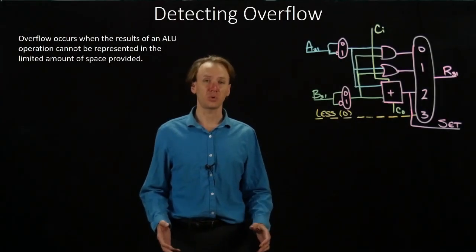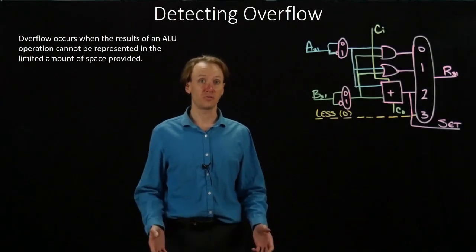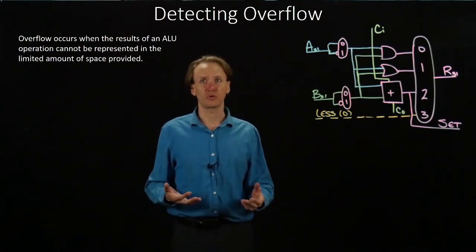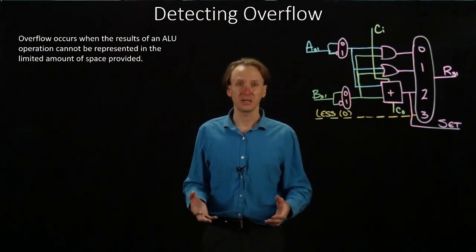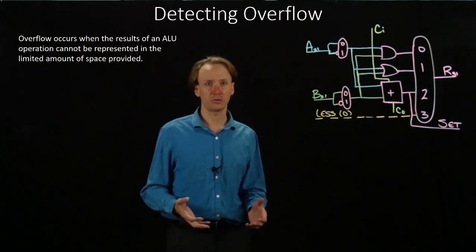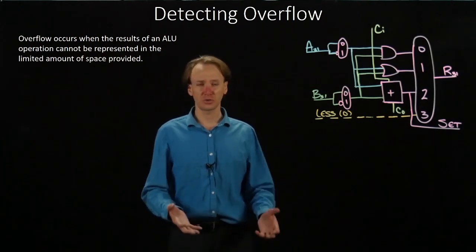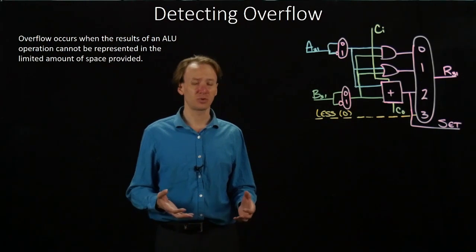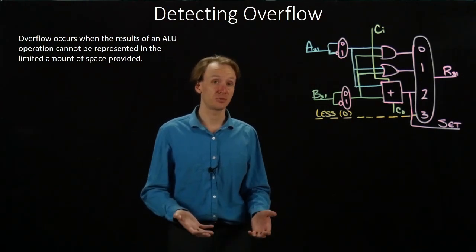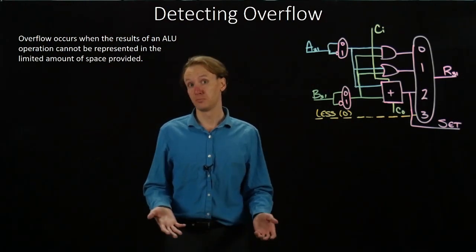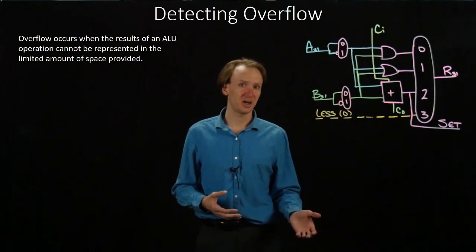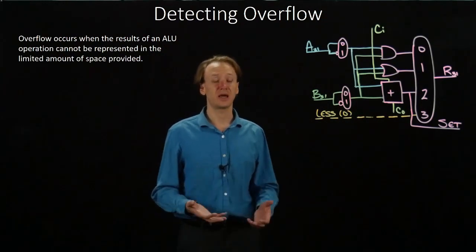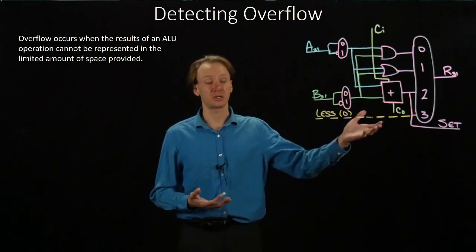This time we're going to be looking at how we can detect overflow. Overflow occurs when the results of an ALU operation can't be represented in the amount of space that we have available for them. For example, if I add two 32-bit numbers together and I get something that would require 33 bits to actually represent, then I have overflow. This can happen either on the positive side or on the negative side, but I usually just get something that's too big to actually represent given our hardware.